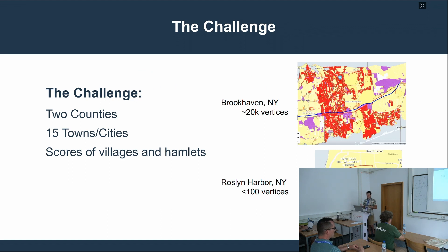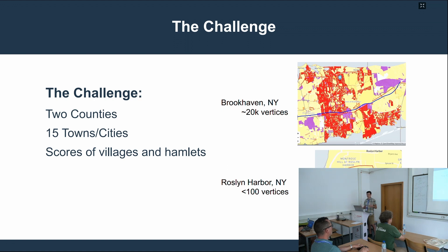So the challenge: Long Island is just one small part of New York State, but it has two counties, 15 towns and cities, and about 100 villages and hamlets. We're getting zoning data from a lot of different sources — some of these are very small towns, some are big, and some have different kinds of zoning methods. For instance, Brookhaven is large, and their zoning ordinance specifies that the zones don't include streets. This is one of the biggest headaches we've had in terms of performance, because it makes the number of vertices in the geometry explode when you have to trace out every single street in every single zone.